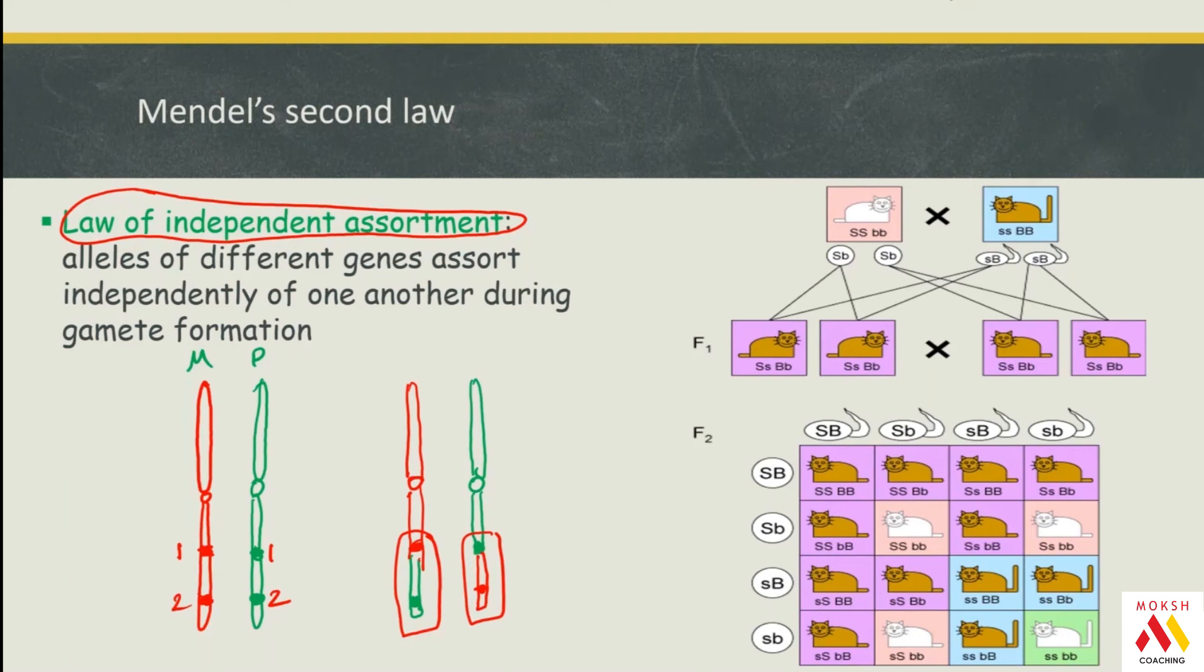Mendel was again lucky. Same thing is happening with the cats here—the two traits were actually independently assorted. One was the length of the tail and the color of the cat. Can you appreciate which is dominant? That's called linkage analysis.